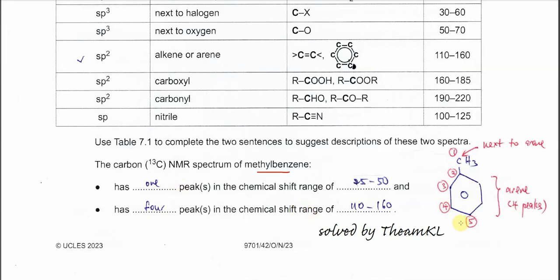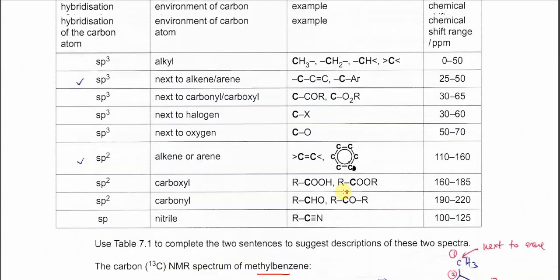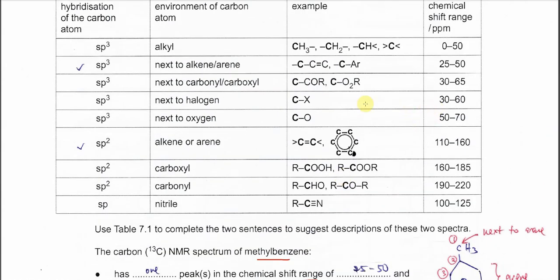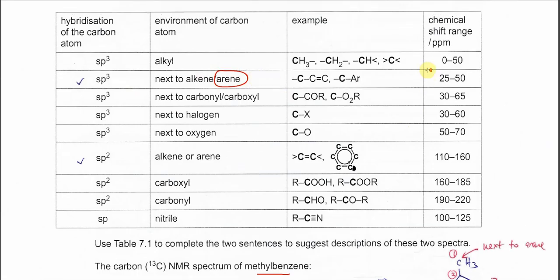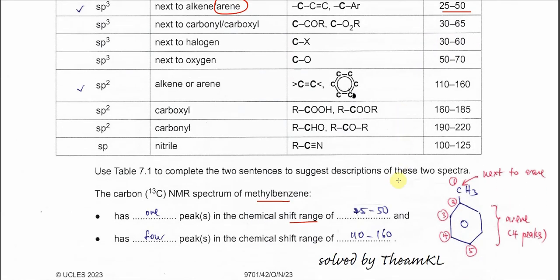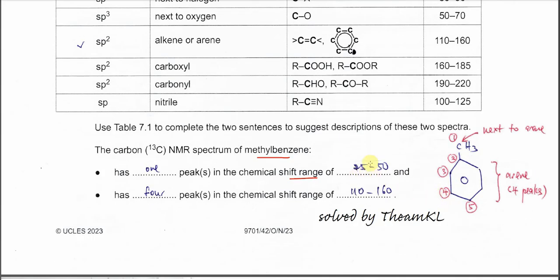From the structure of methylbenzene, we need to know how many peaks are formed and what the chemical shifts are. The methyl group is going to form one peak. Because this methyl carbon is next to the benzene ring, its chemical shift is in the range of 25 to 50 ppm. So you see one peak in the range 25 to 50 — this is for the methyl carbon.